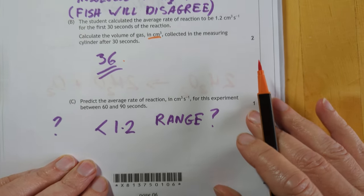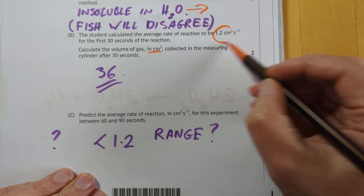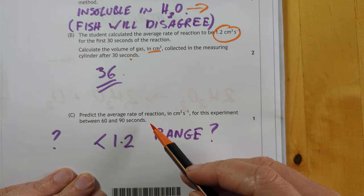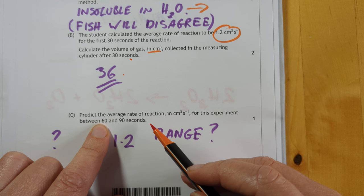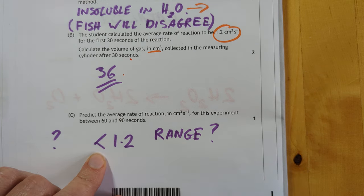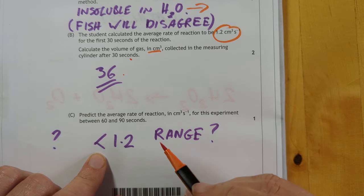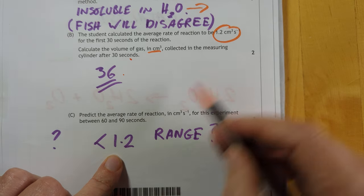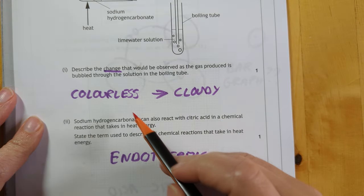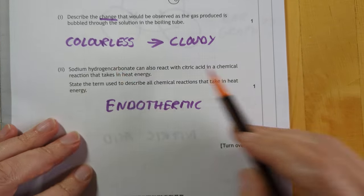This one here. Reactions get slower as they go along. So if it was a rate of 1.2 up to 30 seconds, after 30 seconds it will be less than 1.2. But I don't know how much they're looking for less than 1.2. It's a strange question. So I'm a bit stuck in that. I would imagine anything less than 1.2 should get the answer. We'll find out in August when the official answers are out. They want the change of color. Colorless to cloudy. I think you need both.